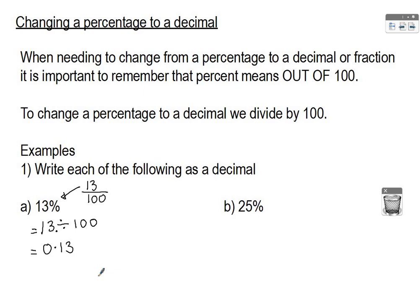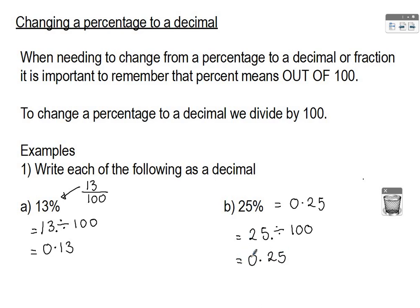If you're not sure about that, look back on the notes from dividing by 100 when we looked at whole numbers. For B, 25% — we actually know this one from the table, so the answer is 0.25, which is absolutely fine to write straight down. If you don't know it, remember we need to do 25 divided by 100: the decimal point makes two jumps to the left, giving us 0.25.